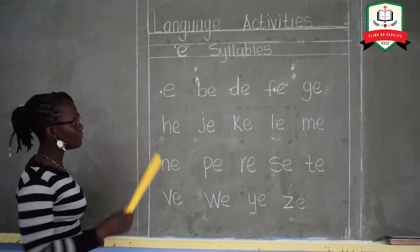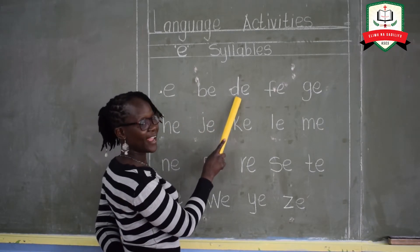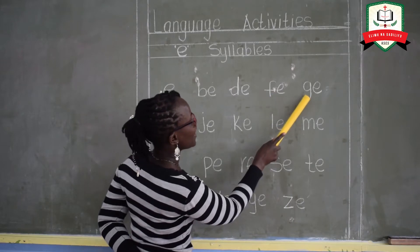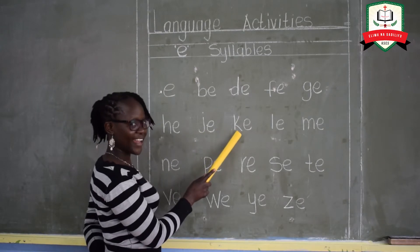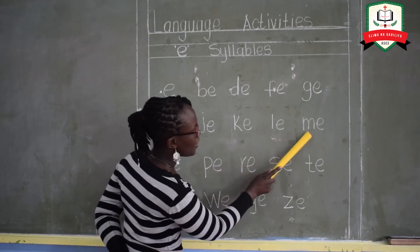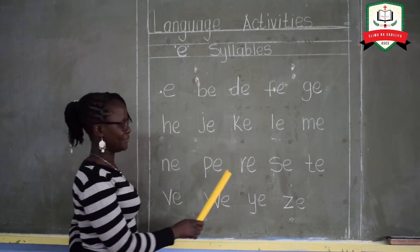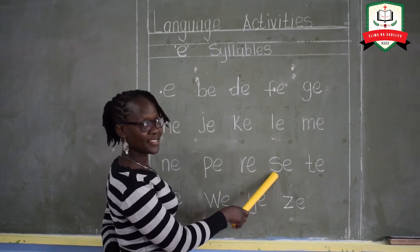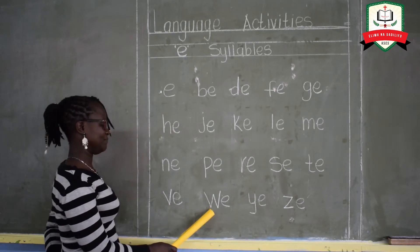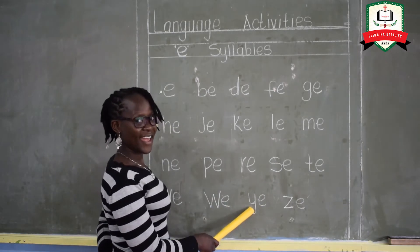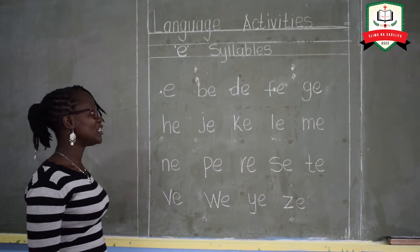Now we start from A for the first part. EA, BA, DA, FA, GA, HA, JA, KA, LA, MA, NA, RA, RA, CA, TA, VA, WA, YA, and ZA. Now we are going to read together.